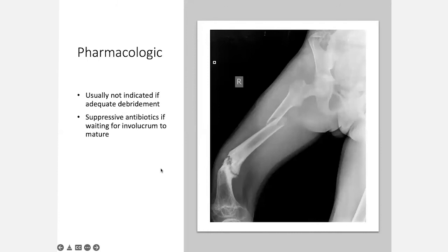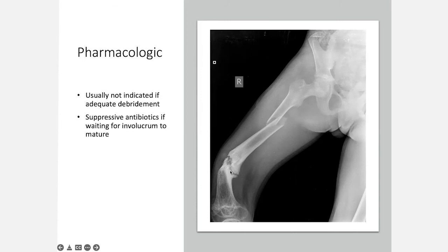In terms of pharmacologic treatments, long-term antibiotics are usually not indicated if there has been adequate debridement. However, you may want to consider suppressive antibiotics if you're waiting for an involucrum to mature prior to performing a definitive sequestrectomy. This 13-year-old presented with chronic osteomyelitis of his distal femur, developed a recurvatum deformity, and then sustained a fracture. Like the five-year-old, we fixed him with an antibiotic-coated Ender nail to achieve bone union. We then performed an anterior closing wedge osteotomy and removed the defect entirely to acutely shorten him. Once the bone healed, we removed the antibiotic nail and performed a CT-guided sequestrectomy.